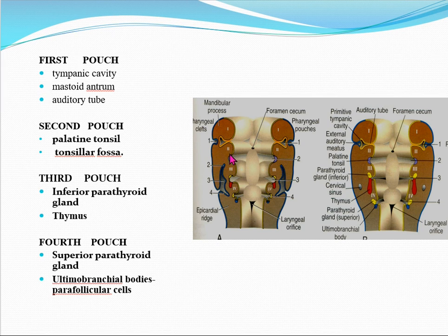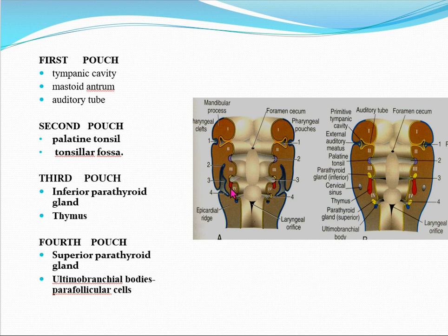The second pharyngeal pouch shows thickening of the endoderm, which invaginates into the underlying mesoderm, resulting in the formation of the palatine tonsils and the tonsillar fossa.